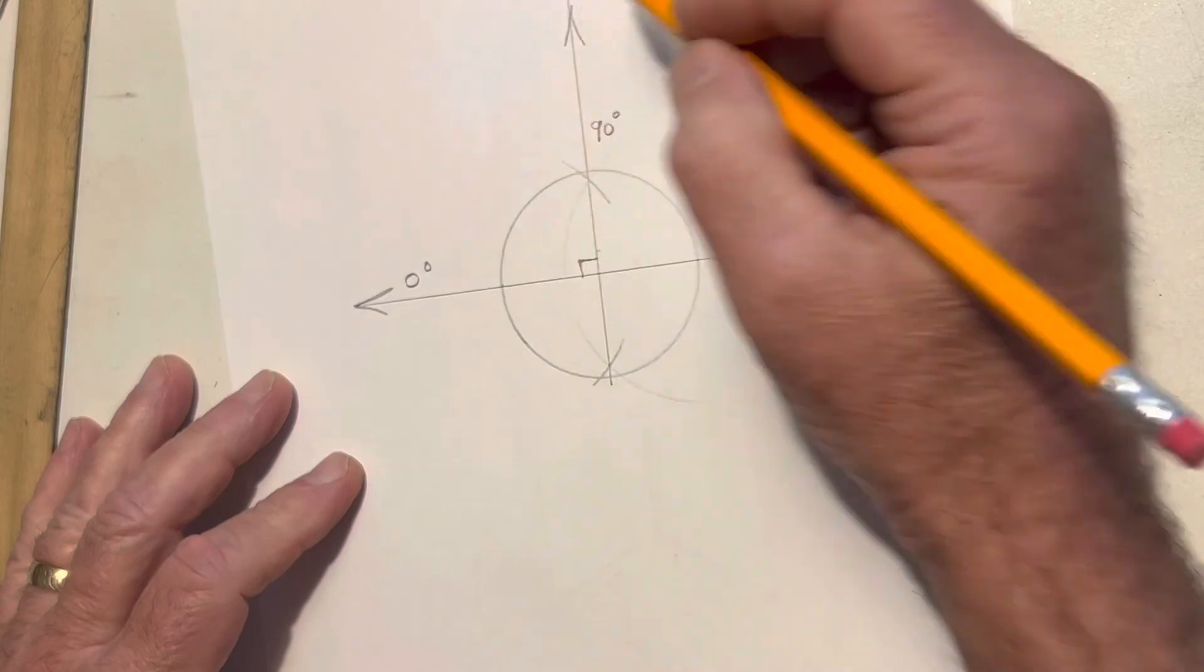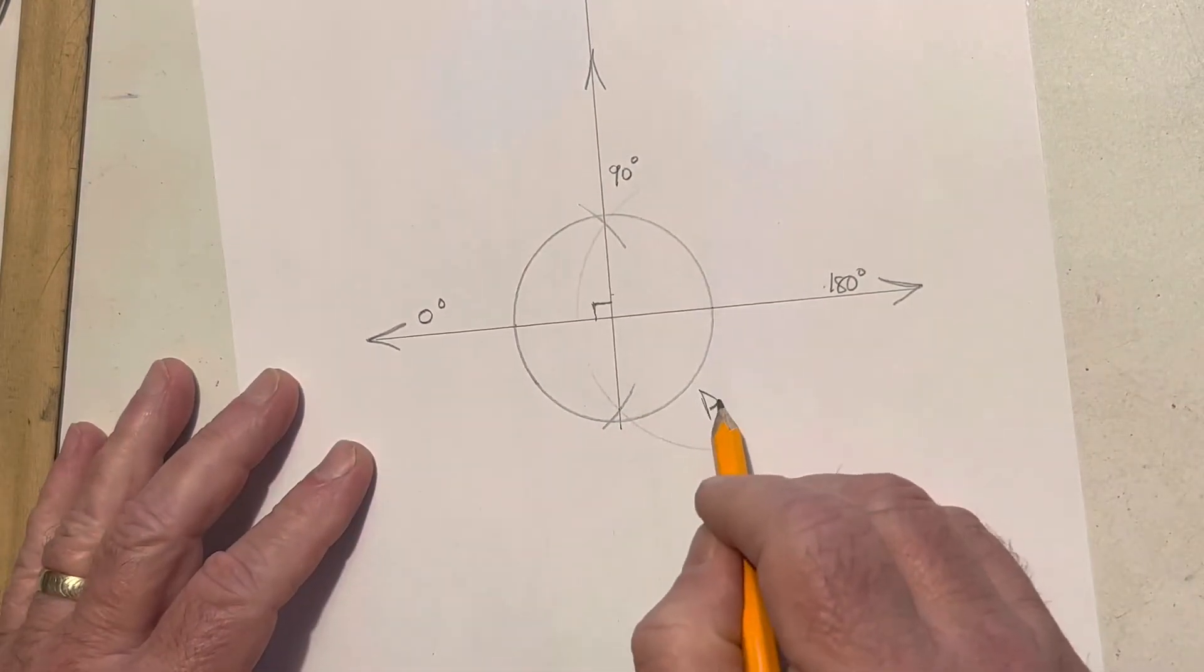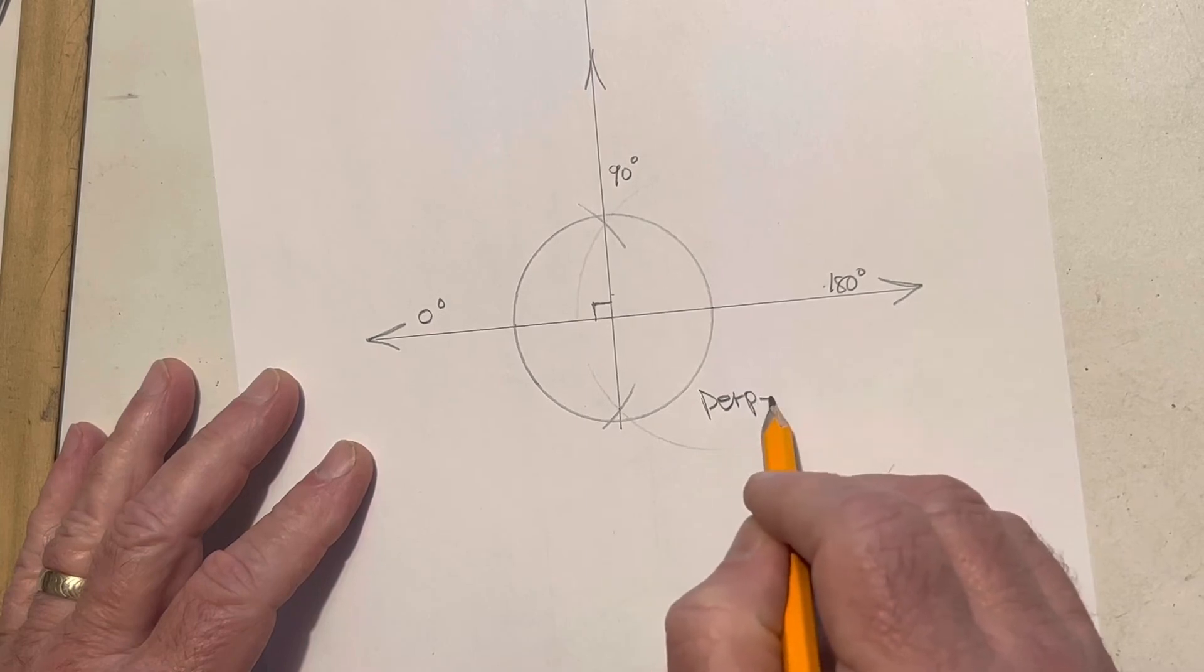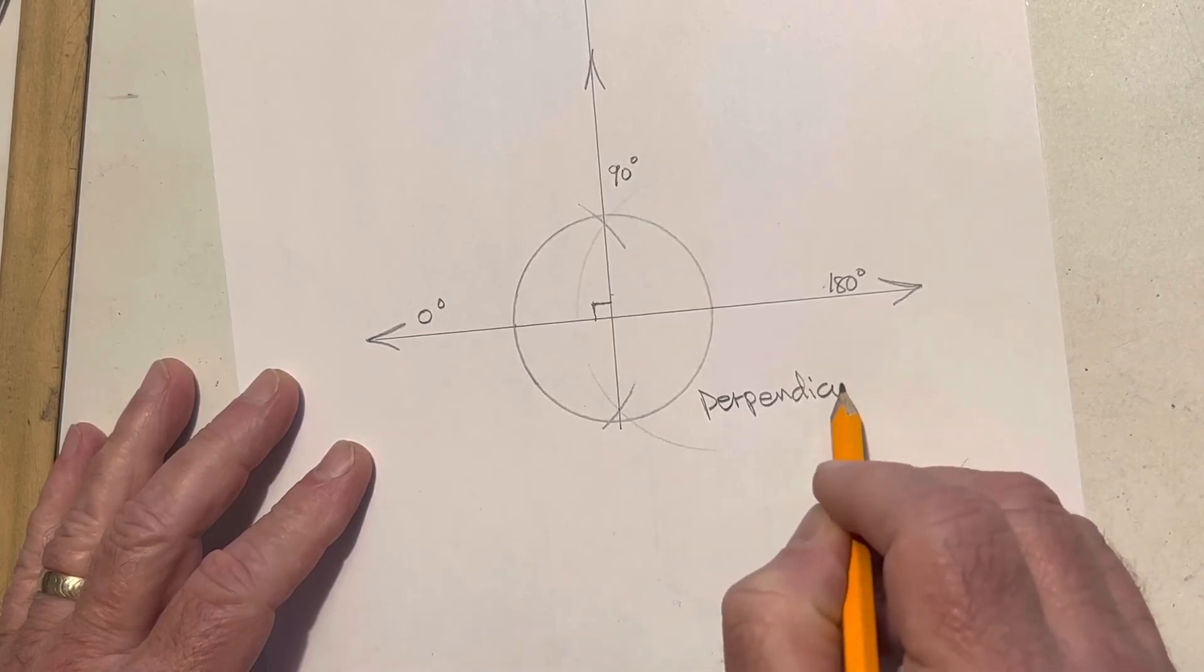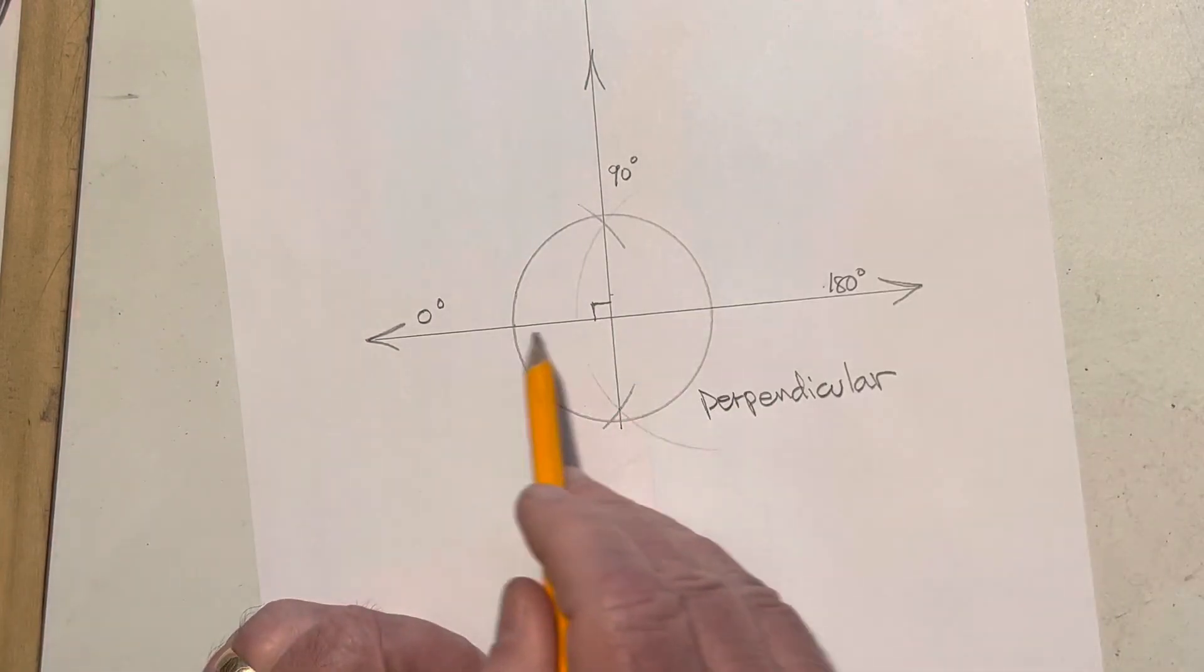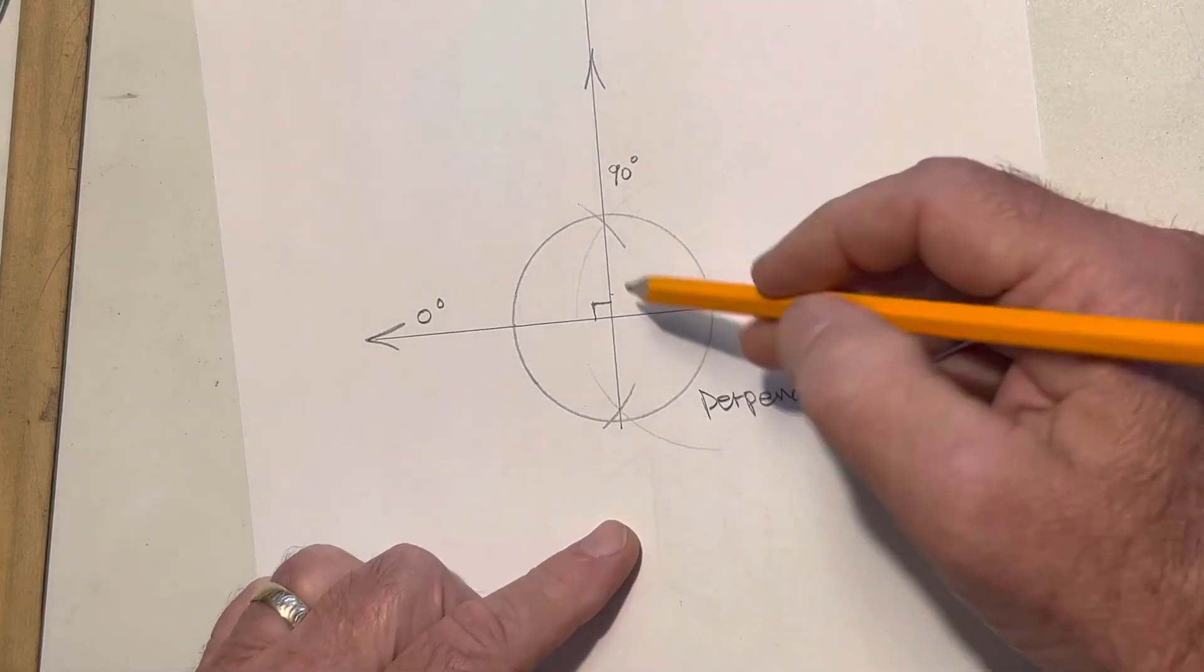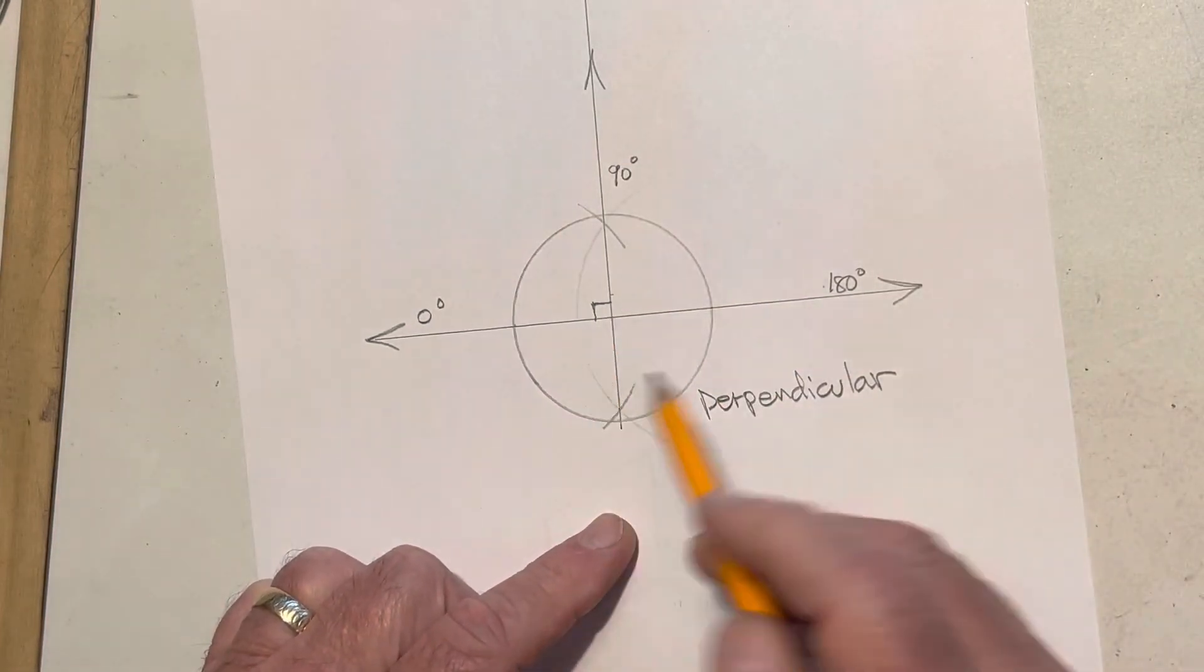That's called perpendicular. It's perpendicular to this line, our initial construction line. Perpendicular lines form a 90 degree angle.